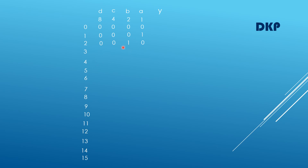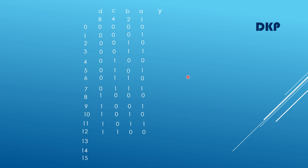What is the binary of 3? 2 plus 1 makes 3, therefore write 1s under 2 and 1 and the remaining bits are 0s. Binary of 4: write a 1 under 4 and the remaining bits are 0s. Binary of 5: 4 plus 1 makes 5, write 1s under 4 and 1. Binary of 6: 4 plus 2 makes 6, write 1s under 4 and 2. Similarly you can write the binary of 7 through 15.